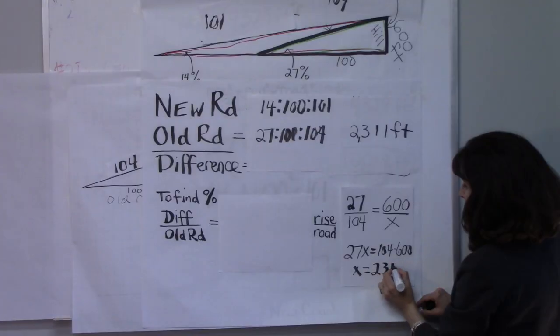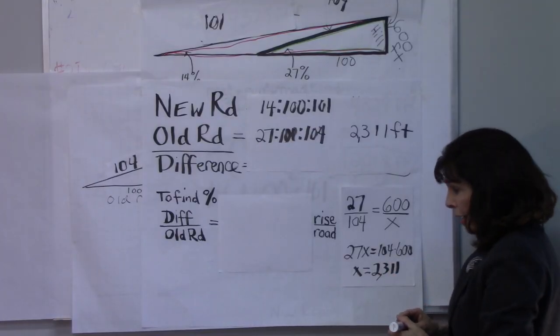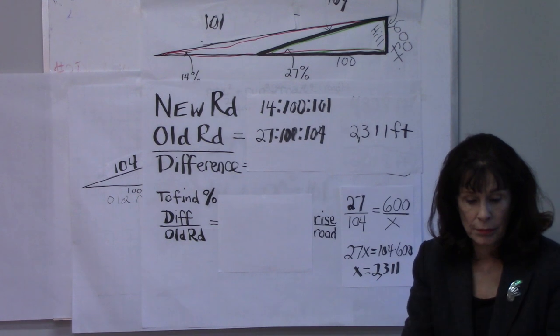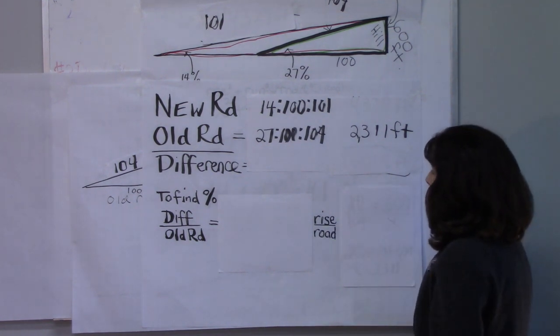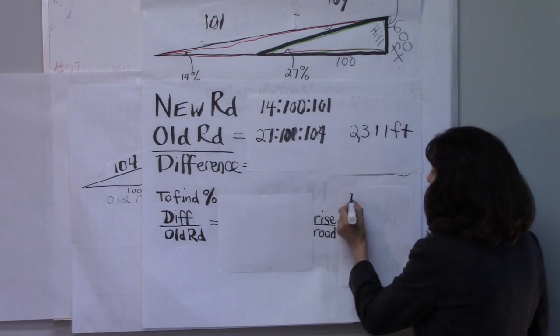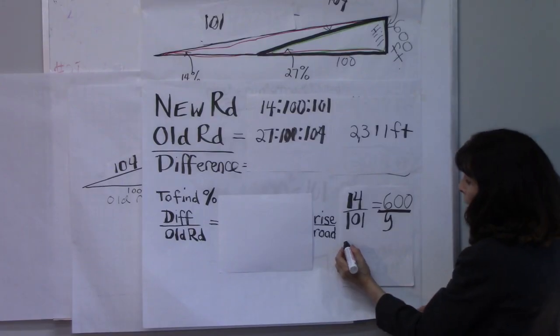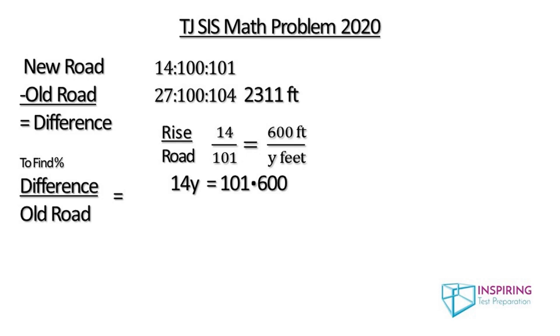Now, we need to calculate the new road, and we can do it in the same manner. We have the new road's height of 14, and that is proportional to its ratio of 101 for the road. And that is set equal to 600 feet for the height of the hill, the rise. And so we have 14 is to 101 as 600 feet is to y feet. And that will be 14y equals 101 times 600 when we cross multiply.